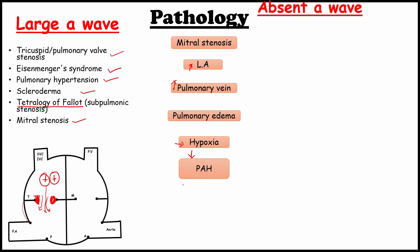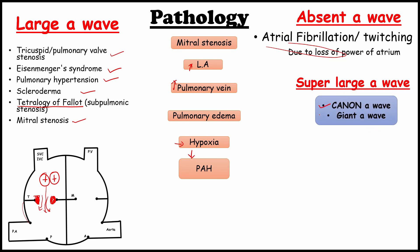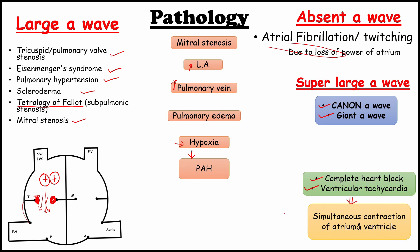The second is absence of A wave. It happens in atrial fibrillation. It happens due to the loss of power of the atrium. Third is the super large A wave. It is also called as cannon A wave or giant A wave. It happens in complete heart block or ventricular tachycardia. In both of this case, there will be a simultaneous contraction of the atria and ventricle and we can see AV dissociation in this case.